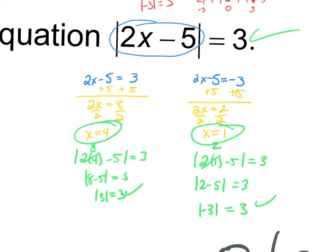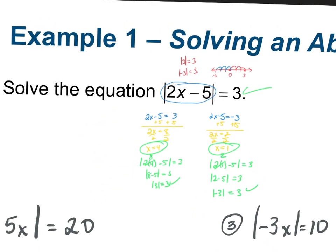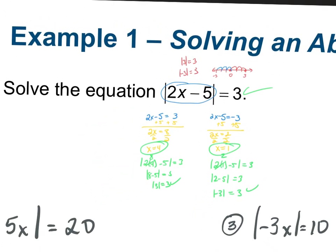What would happen if you plugged them back in and they didn't work? No solution — and that will happen on your WebAssign. So in the blue, you basically have to have a positive answer and a negative answer, and that's how most of them are going to be. If the original said absolute value of 2x minus 5 equals negative 3, then your second equation would be 2x minus 5 equals positive 3. You want to have one negative and one positive.